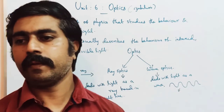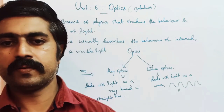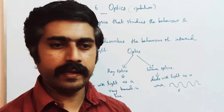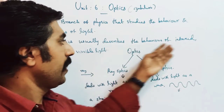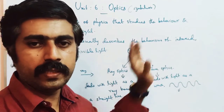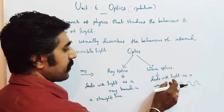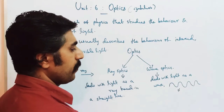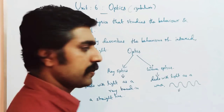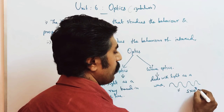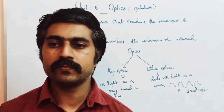Light is actually one part of electromagnetic waves. Wave optics deals with light as a wave. The electromagnetic wave can travel at the speed of light — the value is 3 × 10⁸ metres per second.